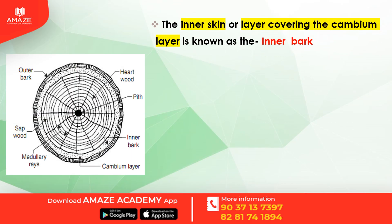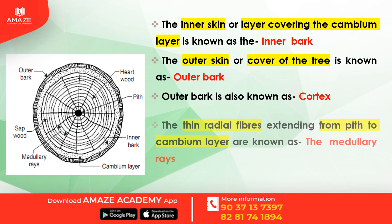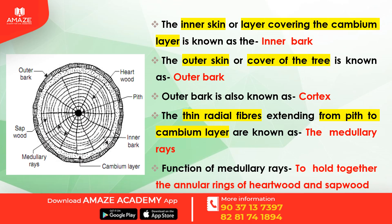The inner skin or layer covering the cambium layer is known as the inner bark. The outer skin or cover of the tree is known as the outer bark, also known as the cortex. The thin radial fibers extending from the pith to the cambium layer are known as the medullary rays. The function of the medullary rays is to hold together the annular rings of heartwood and sapwood.